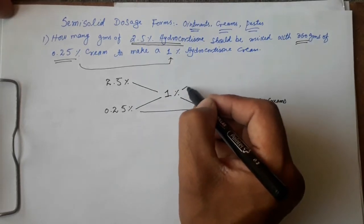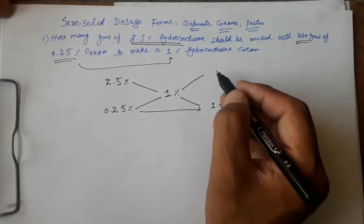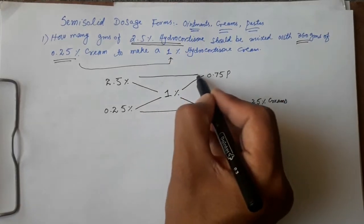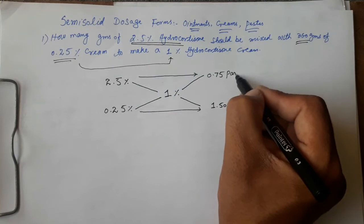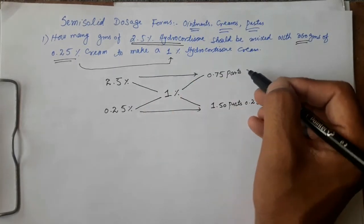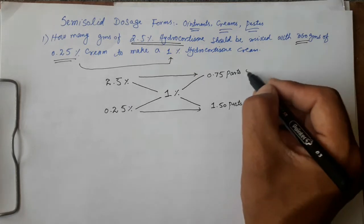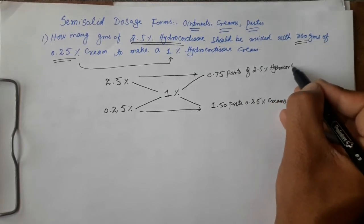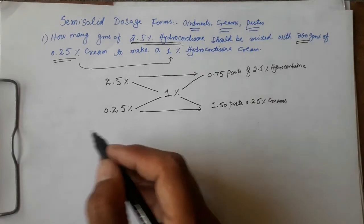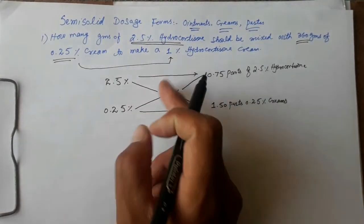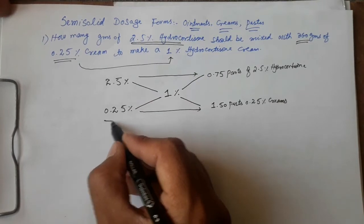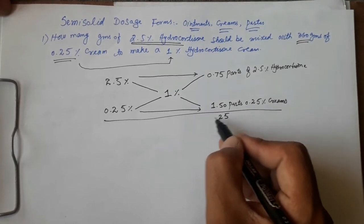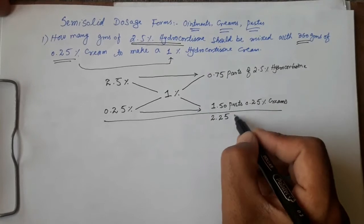If we subtract 0.25 from 1, we will get 0.75 parts. So 0.75 parts of 2.5% hydrocortisone must be present in the final dilution to make 1% hydrocortisone cream. If we add these two values together, we will get 2.25 total parts.